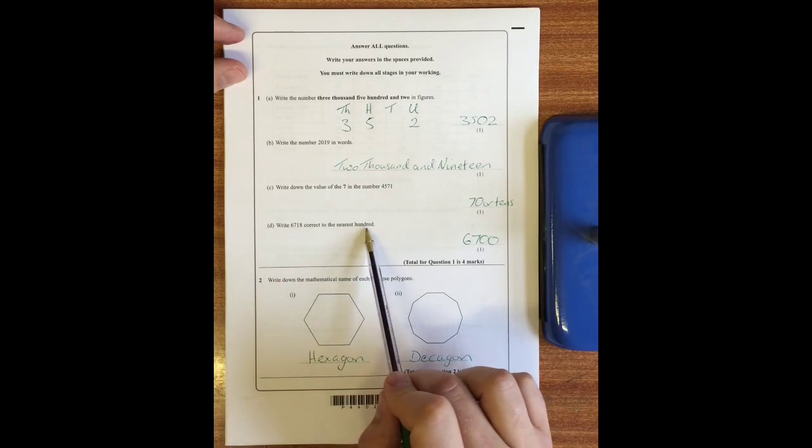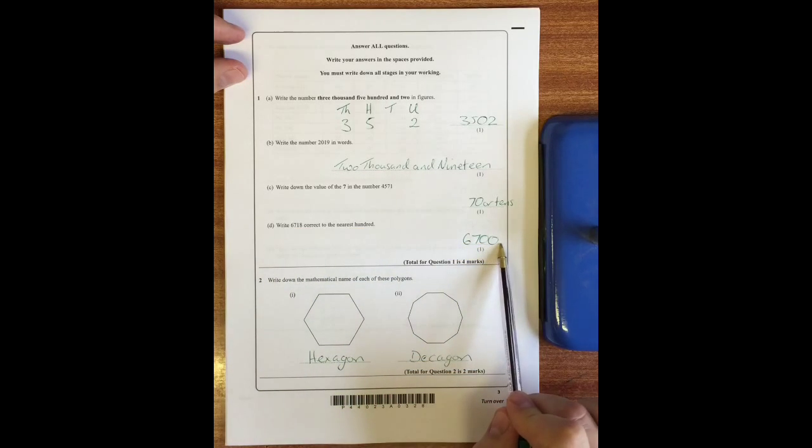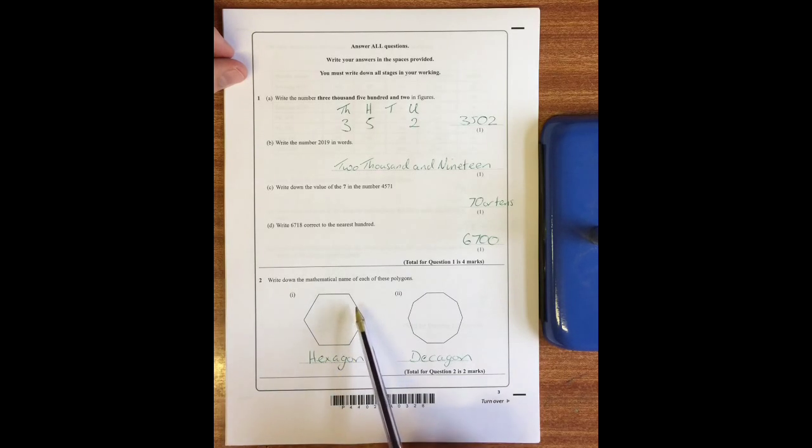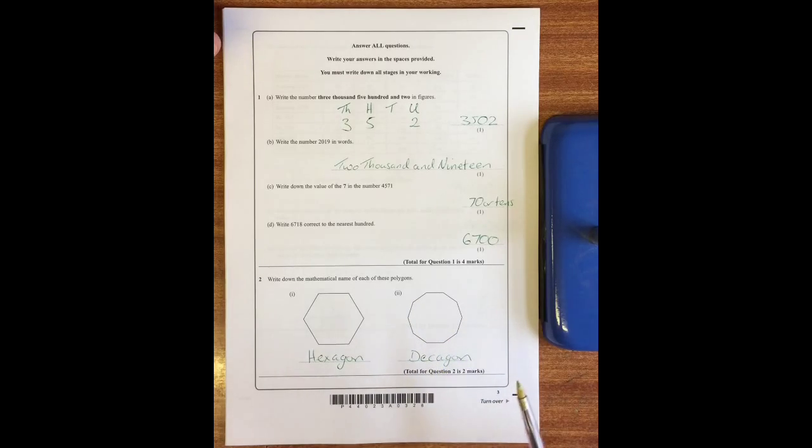Write 6718 correct to the nearest hundred - will be six thousand seven hundred. Question two: this shape has six sides so it is a hexagon, and this shape has ten sides so is a decagon.